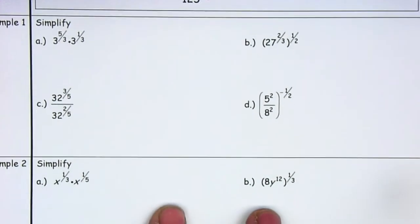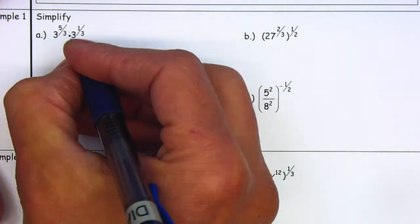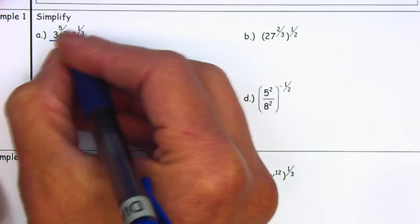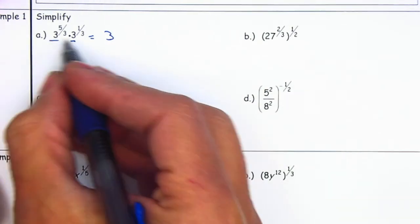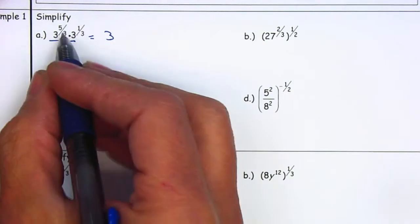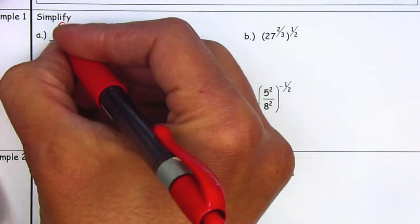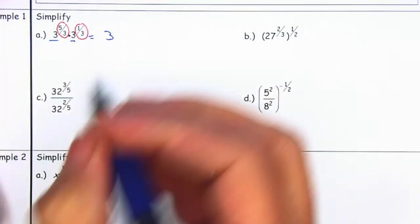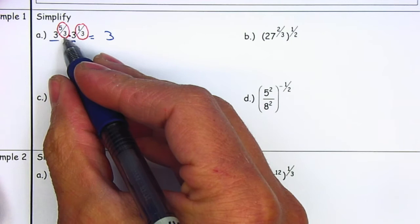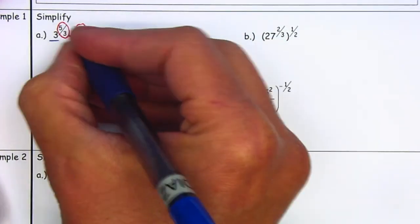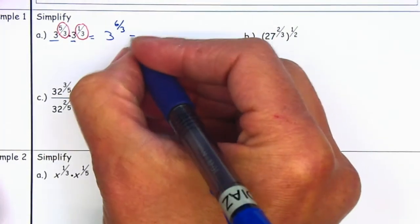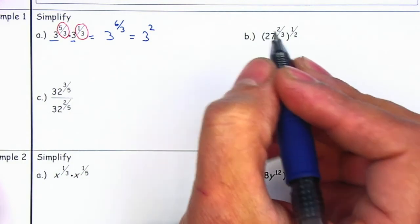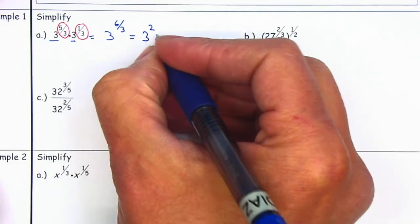Let's go ahead and start with example number 1. On example number 1, I need to be able to simplify. They have the same base, so I can just go ahead and add the exponents. The base stays the same — do not multiply 3 times 3. We are going to add the exponents. In order to add, they have to have the same denominator — they do. So we can just add 5 plus 1 will give me 6; denominator stays the same. I'm going to simplify, so it gives me 3 to the second power, and that is equal to 9.